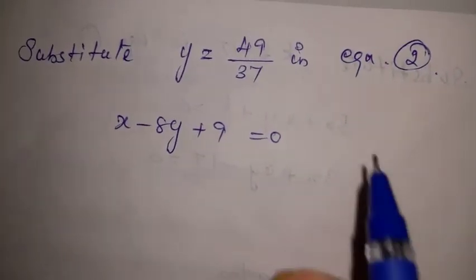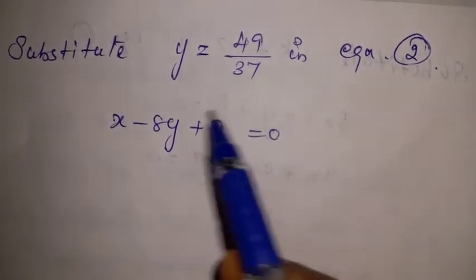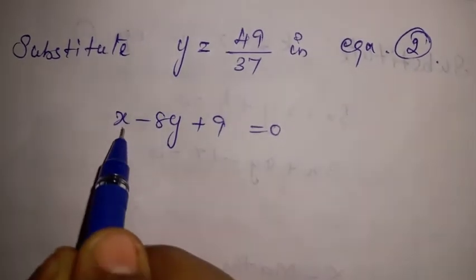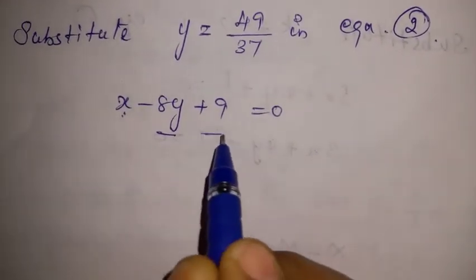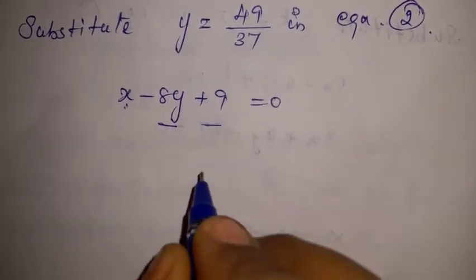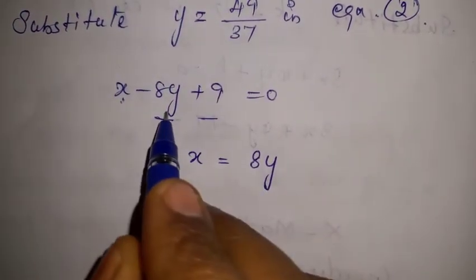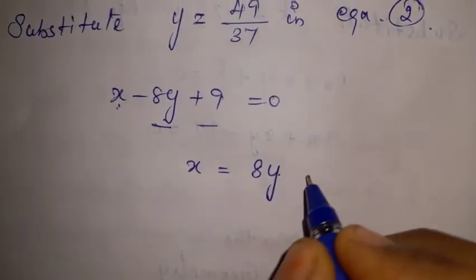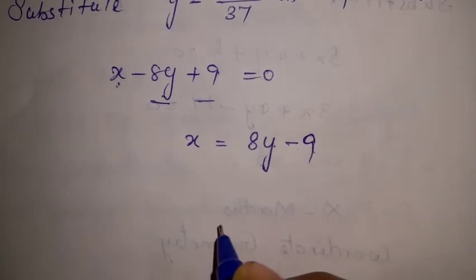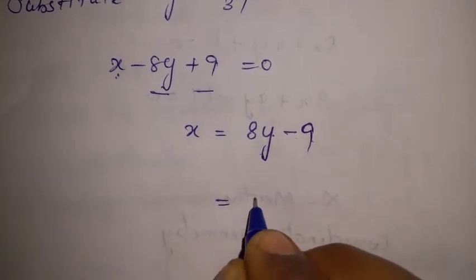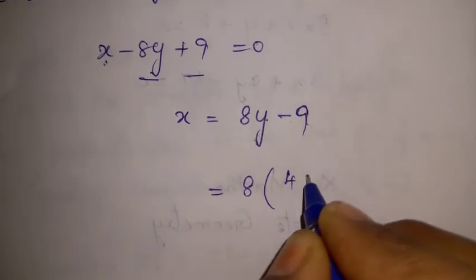Now substitute y equal to 49 by 37 into equation 2: x minus 8y plus 9 equal to 0. Moving the constant to the right side: x is equal to 8y minus 9. Substituting the y value of 49 by 37.